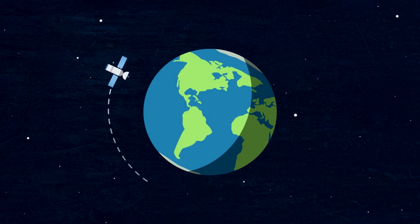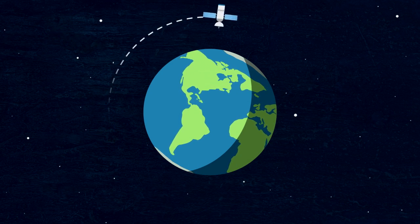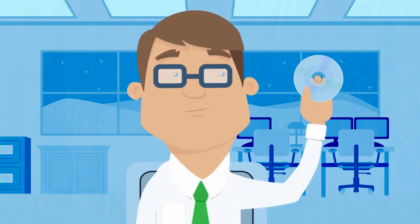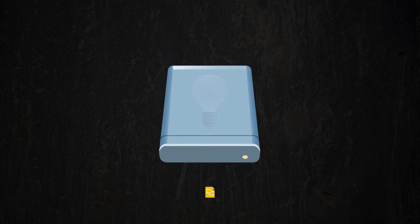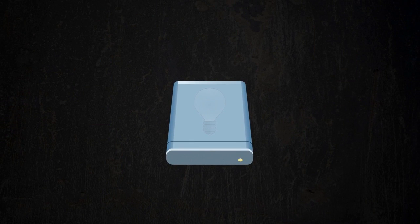In the old world of the personal computer, most applications came in the form of a disk. To run an application, you would install it onto your computer, where you could execute it, creating and saving files as needed to your hard drive.